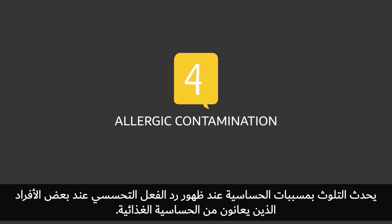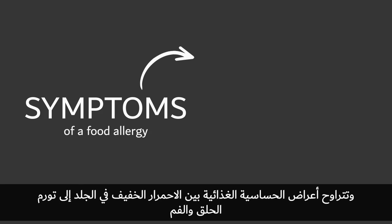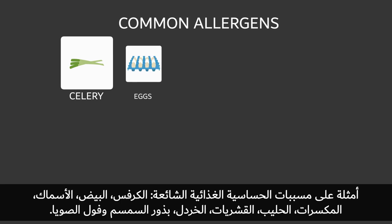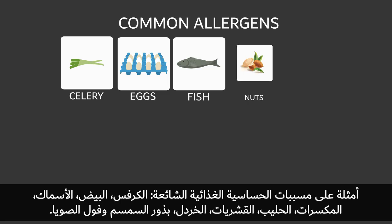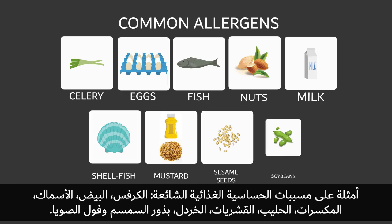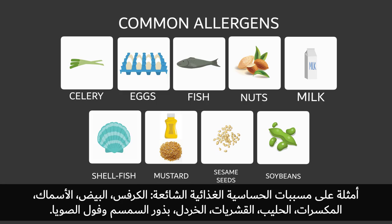4. Allergic contamination happens when some people experience allergic reactions to certain foods. Symptoms of a food allergy range from a mild flushing of the skin or swelling of the throat and mouth that causes difficult swallowing or breathing, to nausea or vomiting, to collapse and unconsciousness. Common allergens include celery, eggs, fish, nuts, milk, shellfish, mustard, sesame seeds, and soybeans.